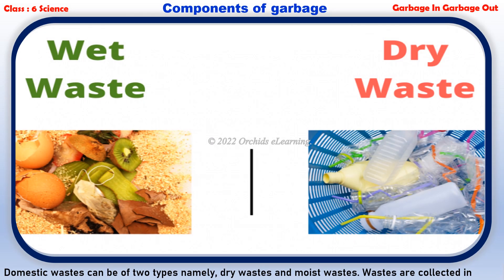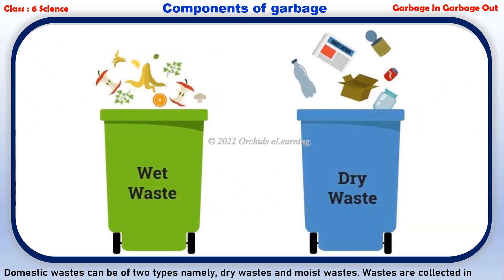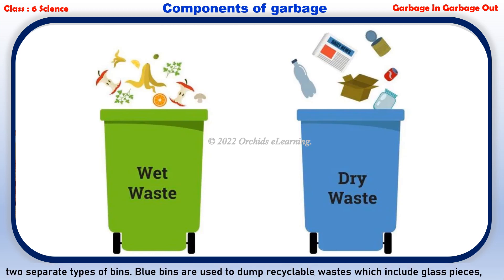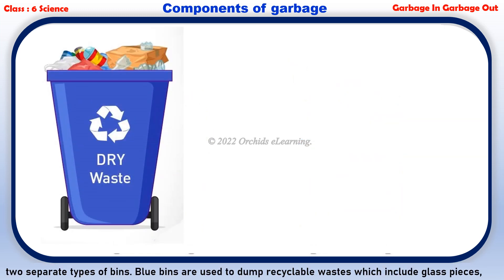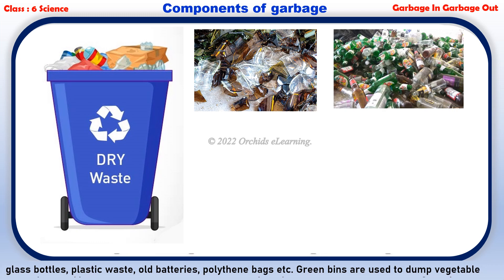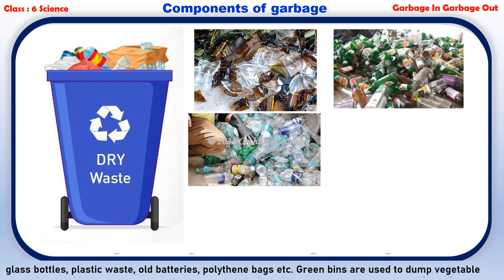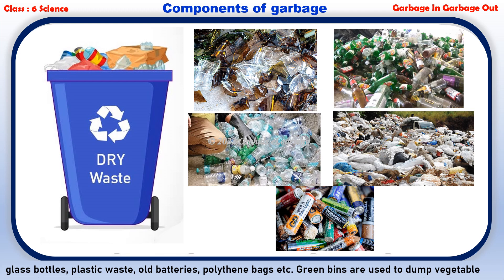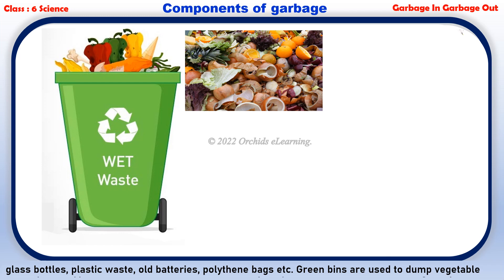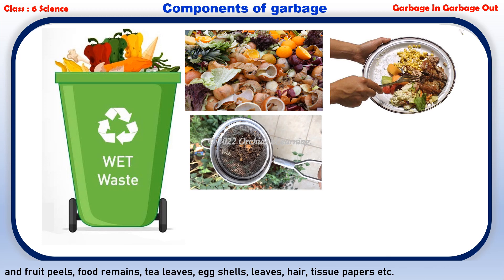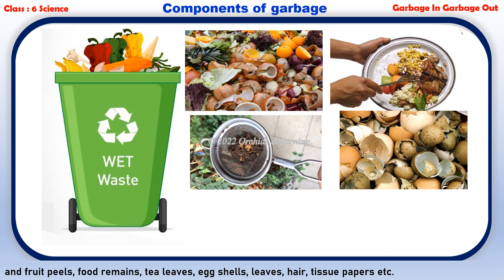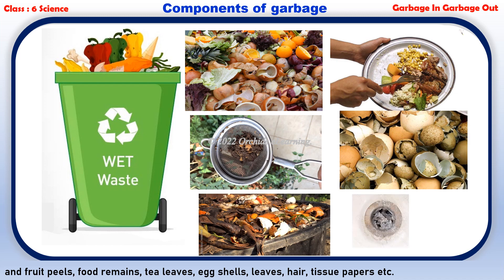Components of garbage: domestic wastes can be of two types, namely dry wastes and moist wastes. Wastes are collected in two separate types of bins. Blue bins are used to dump recyclable wastes, which include glass pieces, glass bottles, plastic waste, old batteries, and polythene bags. Green bins are used to dump vegetable and fruit peels, food remains, tea leaves, eggshells, leaves, hair, and tissue papers.